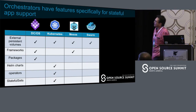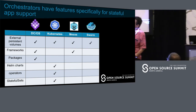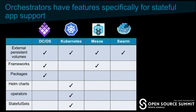Moving on to container orchestrators: this chart shows features across an assortment of container orchestrators related to running stateful apps inside containers. On the far left, DCOS supports external persistent volume mounts. Kubernetes, Mesos, and Swarm do as well. DCOS and Mesos support frameworks — a two-level scheduler — with frameworks published specifically to support stateful applications. DCOS has packages for stateful apps. Kubernetes has something similar called Helm Charts, and also operators and stateful sets, which I'll go into in detail.